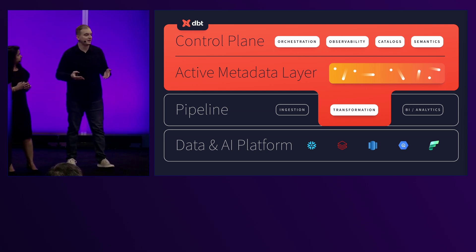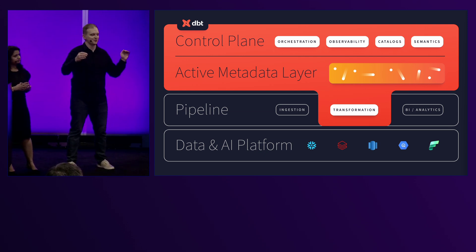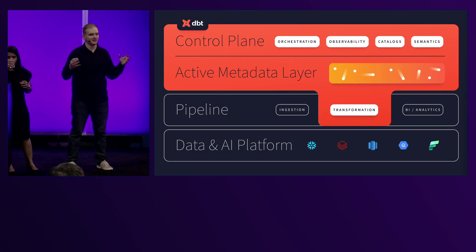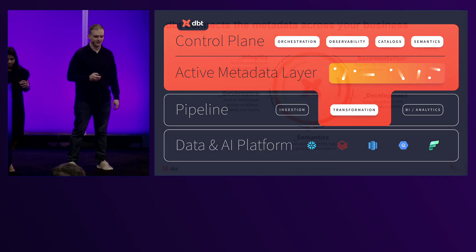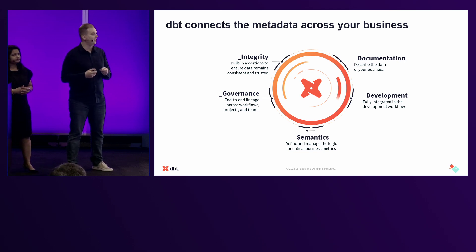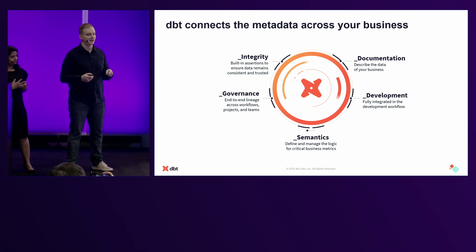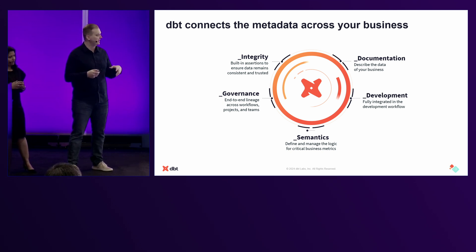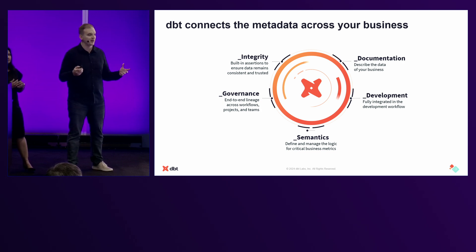That metadata feeds into an actively updated metadata layer, which enables us to create what we call a data control plane. dbt can be the place where you build, deploy, orchestrate, observe, catalog — everything to do with your analytics stack. This is really powerful because it allows you to govern your data, develop your transformations more rapidly and with more confidence, in a way that is better governed.